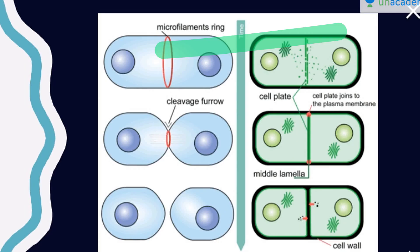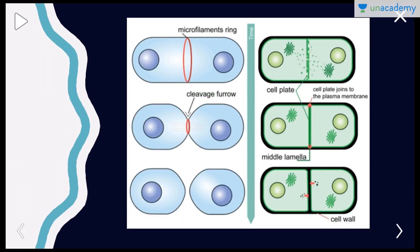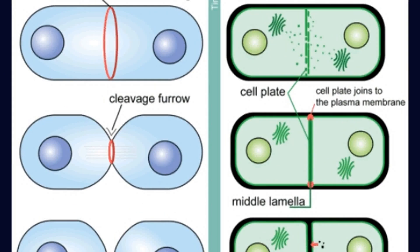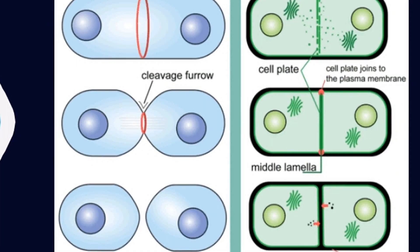In plant cells there is a cell wall, so you have to do new cell wall formation. Looking at the image: the green layer is the plasma membrane and the outer black layer is the cell wall. What happens is the Golgi body, along with some other cell organelles, starts secreting modified structures and begins building a wall from the center outward. This center structure is called the cell plate.